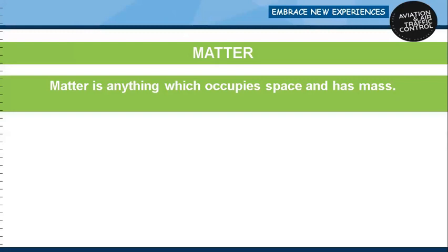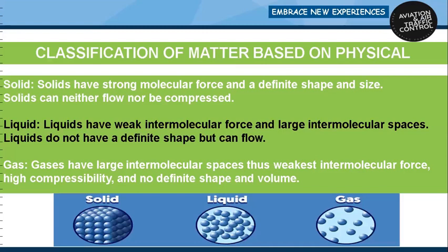Matter: anything which occupies space and has mass is called matter. Examples include air, water, sugar, sand, and oxygen. Matter may be classified in a number of ways. Based on physical properties, there are three normal states of matter: solid, liquid, and gas. Solids have strong molecular force and a definite shape and size; solids can neither flow nor be compressed. Liquids have weak intermolecular force and large intermolecular spaces; liquids do not have a definite shape but can flow. Gases have large intermolecular spaces, thus weak intermolecular force, high compressibility, and no definite shape and volume.